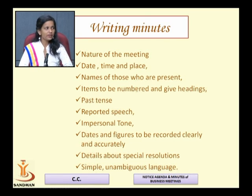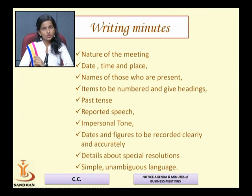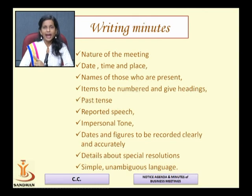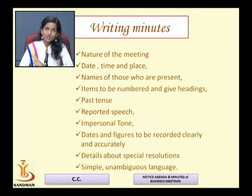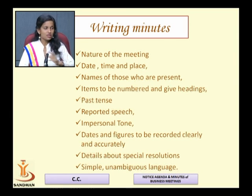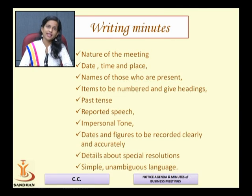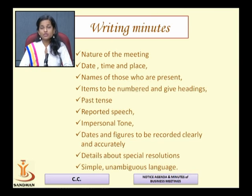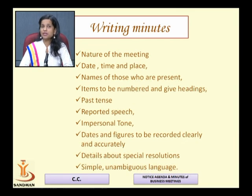There are two ways we write date, time, and place. The first is where and when the meeting was held, and the second is the date and place when we are actually writing the minutes. The second date — when and where the meeting was held — must be mentioned very accurately and clearly.